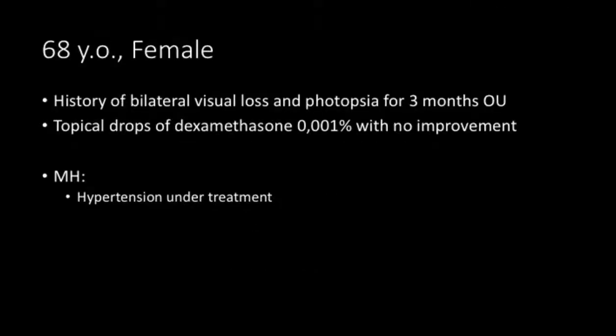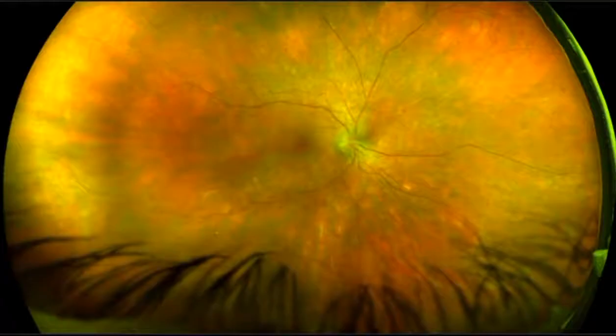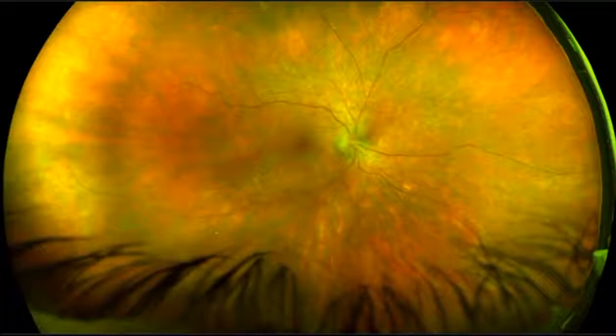I would start with a clinical case. This is a case of a 68-year-old female who came with a history of visual loss in both eyes and photopsia. She was treated with topical steroids with no improvement. On fundus exam, we can see an optic nerve with blurry margin, tortuous vessels, a hypopigmented spot inferiorly, and a blunt macular reflex.